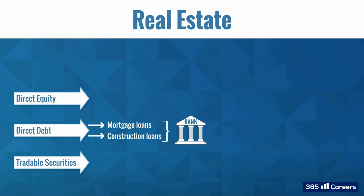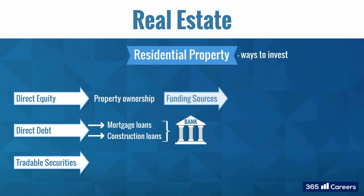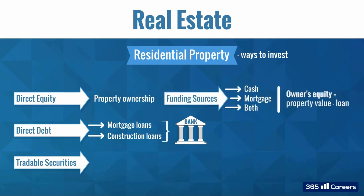Direct investment in residential property can be funded with cash, a mortgage loan, or both. The owner's equity is equal to the property value minus the loan amount. Lenders or issuers hold a direct investment in a whole mortgage loan. They can sell the mortgages they have originated, which can be pooled or securitized.